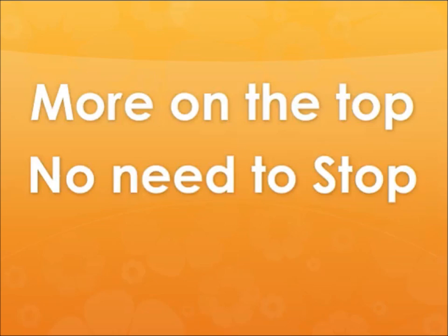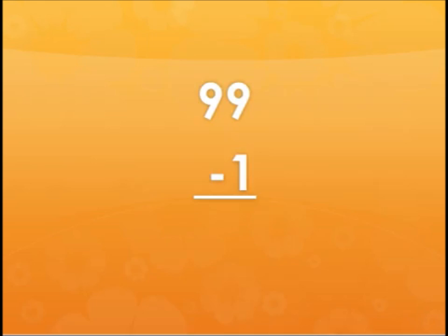Let's try this again. Let's start from the beginning. More on top, no need to stop. So, let's start with this problem, 99 minus 1. We're looking at the 1's place value for all of these problems. And in this problem, 9 is bigger than 1, so there's no need to stop. You can just subtract 99 minus 1 like a normal subtraction problem.